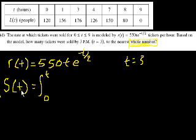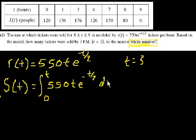If we want to know the tickets sold between time equals 0 and t, it equals the integral of the rate at which the tickets sold was changing. So that's equal to 550t times e to the minus t over 2 dt. All right, that's it.